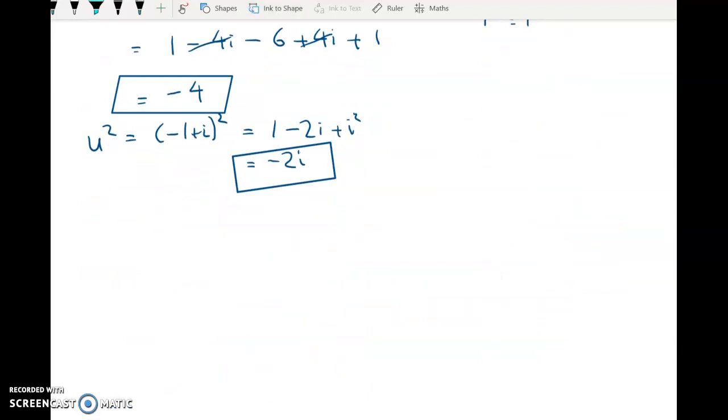Remember we're trying to show that u is a root so by the factor theorem we want to show that when we substitute it in we're going to get 0. So u to the power of 4 gives me negative 4, then I've got plus 3z squared plus 6z plus 10.